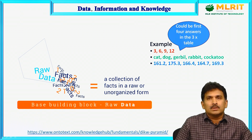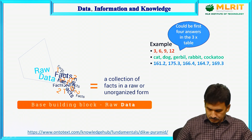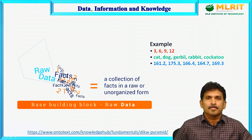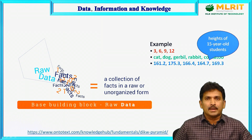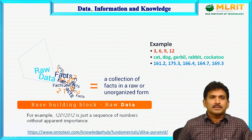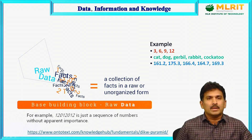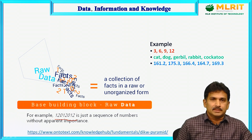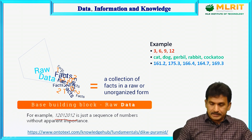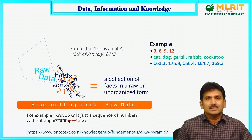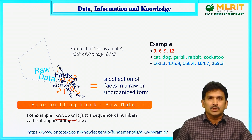The 3, 6, 9, 12 could be the first 4 answers in the 3 times table. The cat, dog, gerbil, rabbit and coccato could be a list of household pets. And the numbers like 161.2 could be the heights of 15-year-old students in a class. Let us take another example: the number 120120. It is just a sequence of numbers without apparent importance. But if you add a context — if you view this as a date — then it is very easy to recognize as 12th of January 2012.